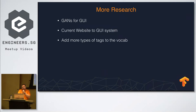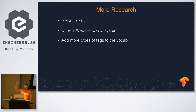From a research perspective, you could actually develop a GAN to do this — for both making training images and making the different types of GUIs. You could also build a system to crawl current websites and use that to make training data.